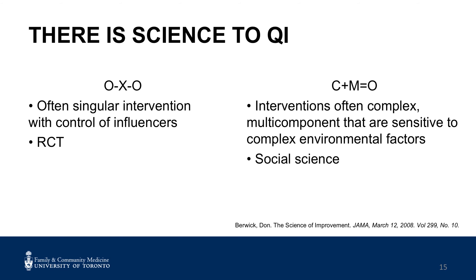Contrast this with C plus M equals O, where complexity in the system is represented as context, plus mechanism or the change, equals outcome. Programs work or have successful outcomes only insofar as they introduce the appropriate ideas and opportunities, or mechanisms, to groups in the appropriate social and cultural conditions, or contexts. Reference the pre-reading article, The Science of Improvement, by Dr. Don Berwick.